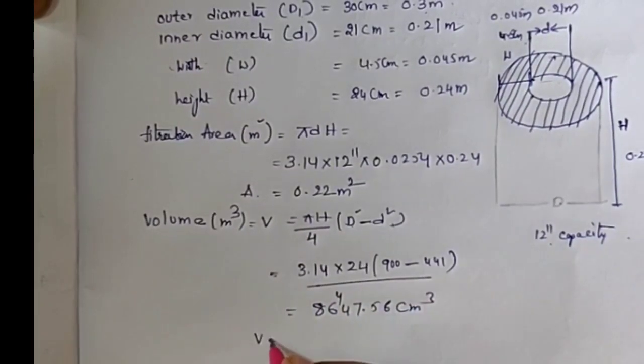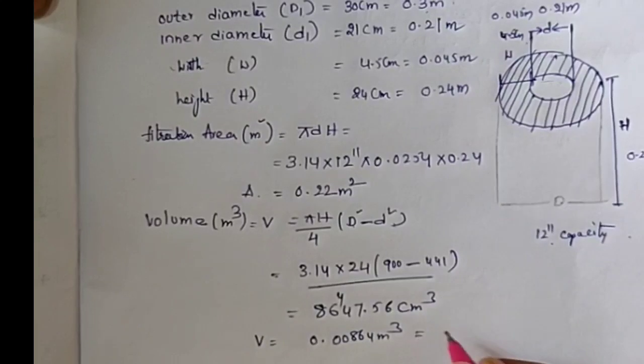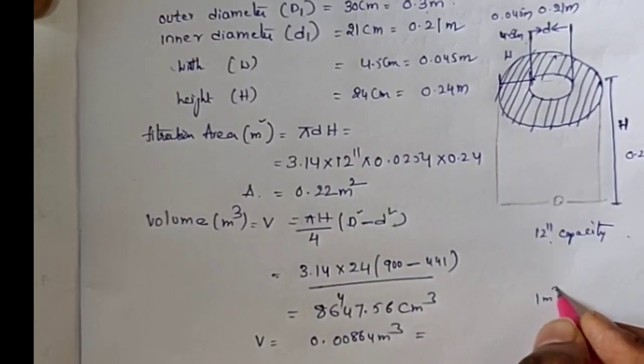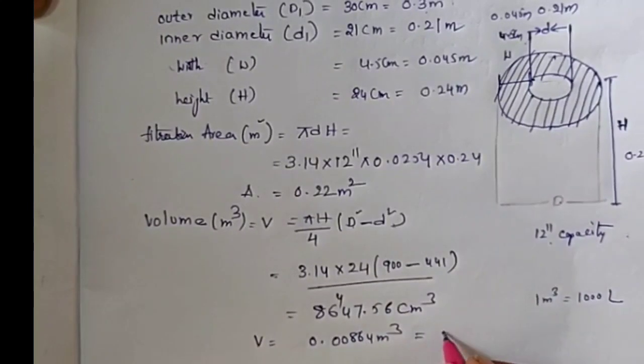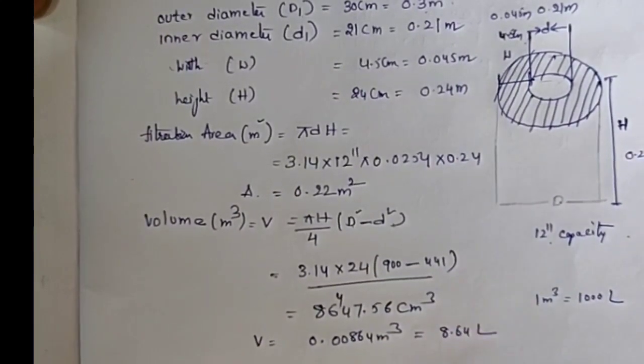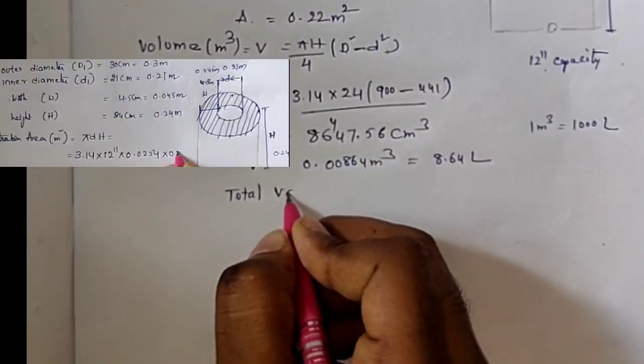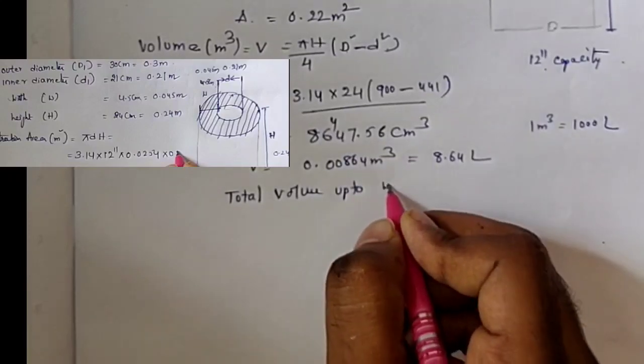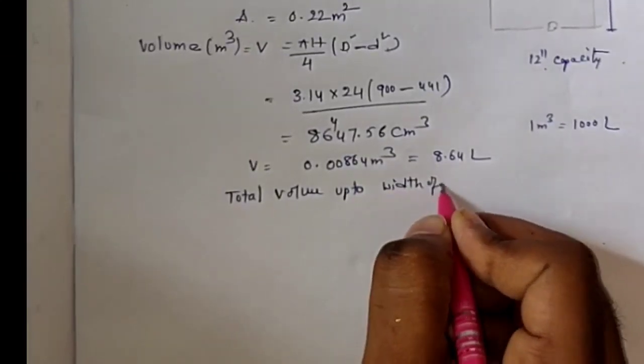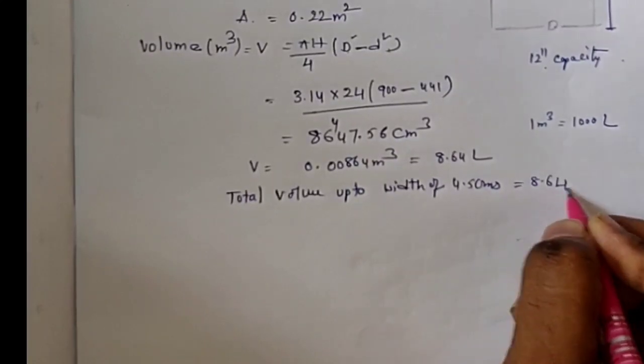If you convert this into meter cube and then to liters, since 1 meter cube equals 1000 liters, you will get 8.64 liters. Total volume up to width of 4.5 centimeters is 8.64 liters.